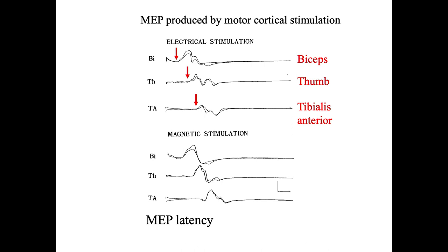Focusing on the motor evoked potential latency: with a single stimulation, the MEP latency is shortest in the biceps muscle. It becomes longer in the thumb, recorded in the APB muscle, and is longest in the leg muscle tibialis anterior. The latency becoming longer from upper limb to lower limb is consistent with the anatomical locations of the different muscles.